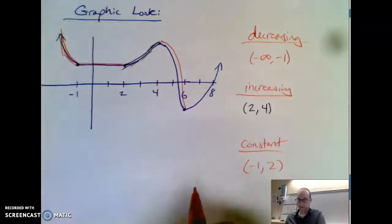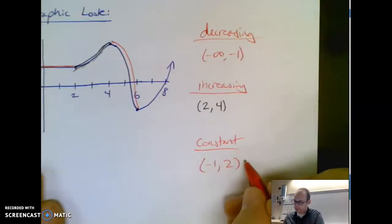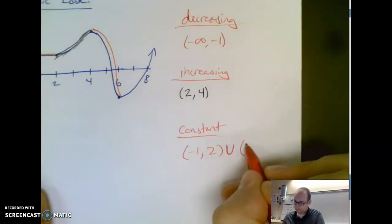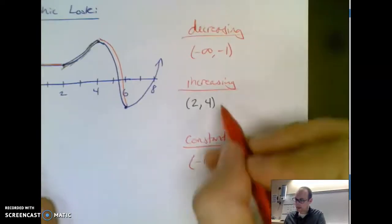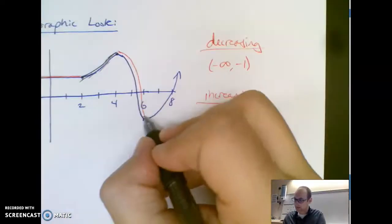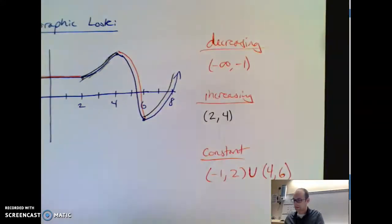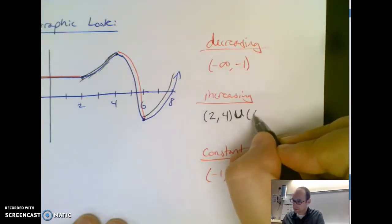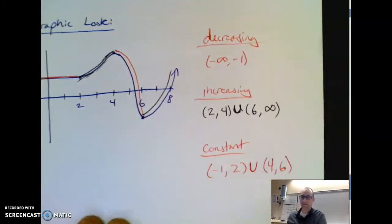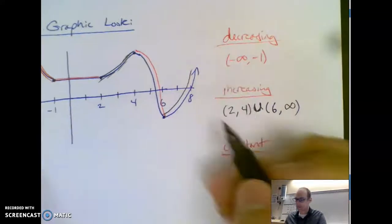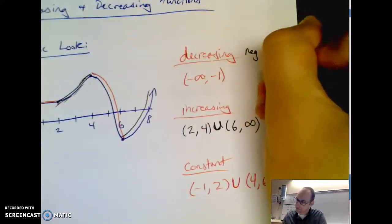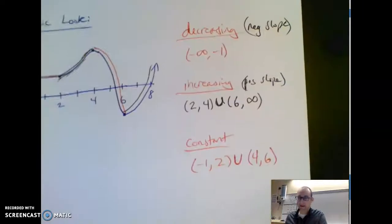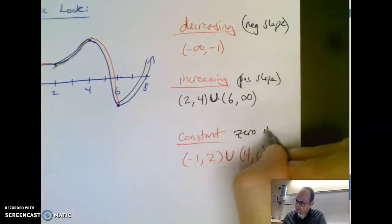From 4 to 6 we're going downhill. I'll put a union symbol here — it's a math symbol that means put these together. So we have a union of 4 to 6, and then it goes back increasing again uphill for the rest of the graph: from 6 to infinity we're going up forever. Basically, decreasing is when you have a negative slope.